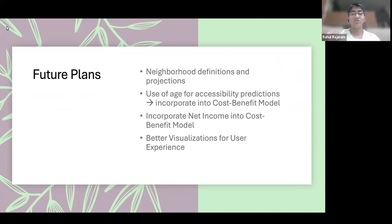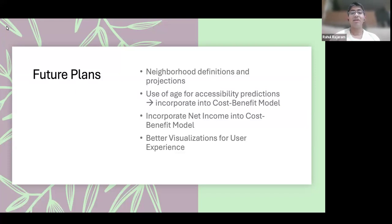Our future plans include stricter neighborhood definitions and better neighborhood projections — better projecting where bus stops should go and where they should be placed. Additionally, we want to incorporate age and net income into the cost-benefit model to better represent underserved and disabled communities, as well as better visualizations for improved user experience and accessibility.